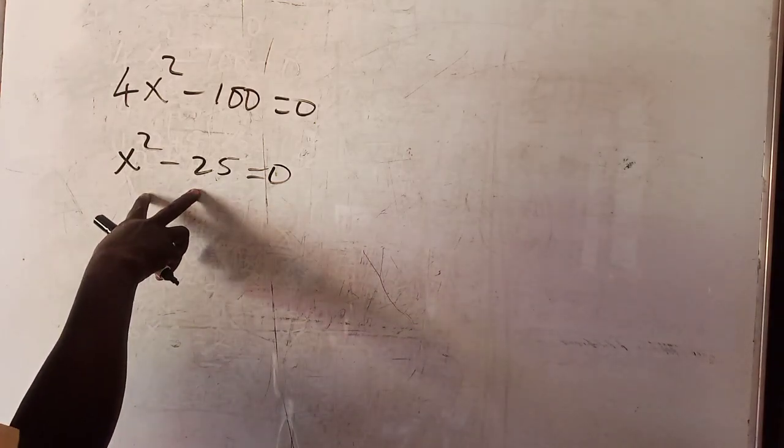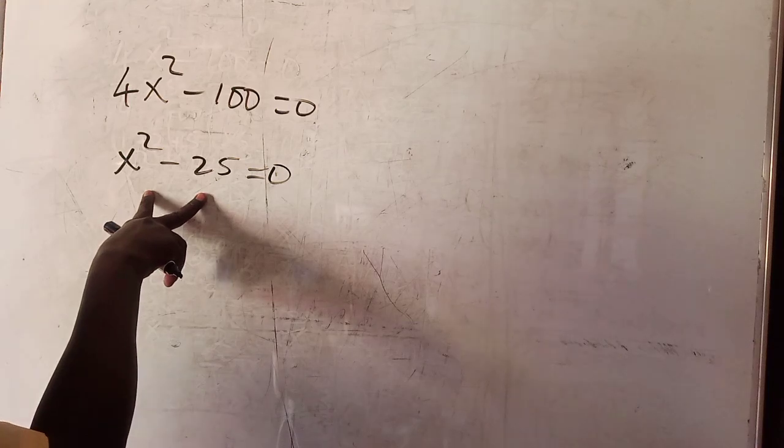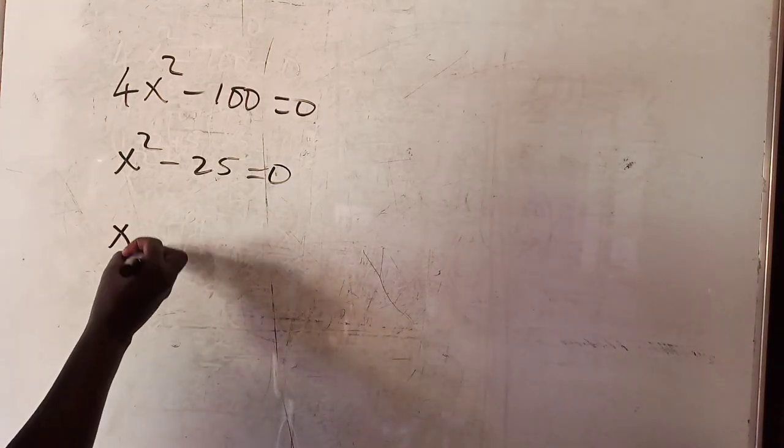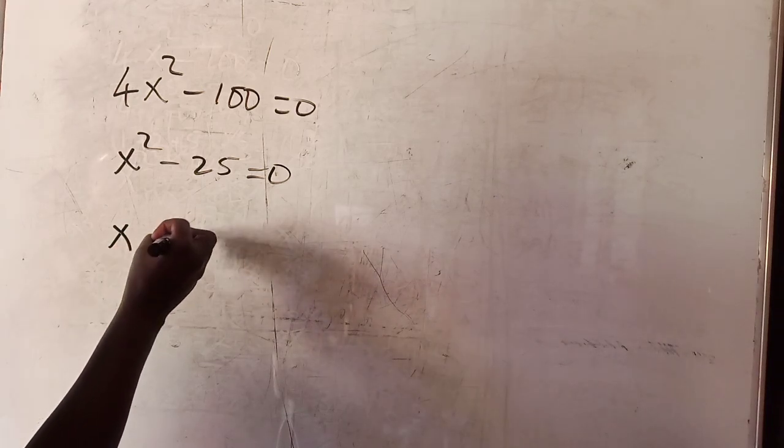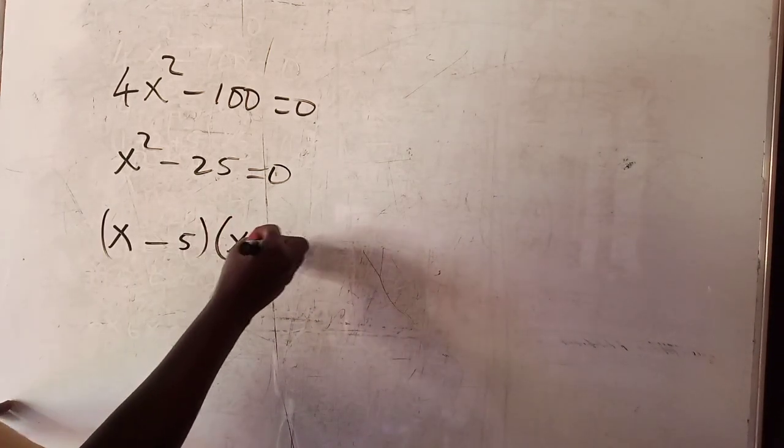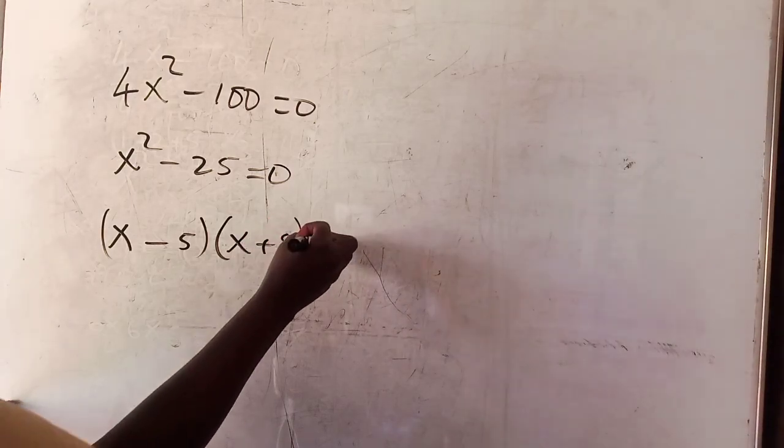This is the difference of two squares, which is (x - 5)(x + 5) = 0.